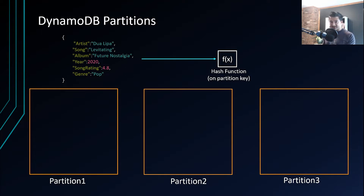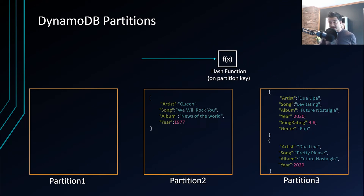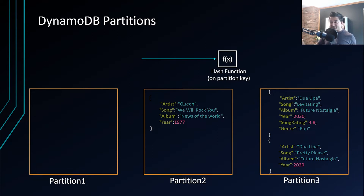When you insert an item, DynamoDB runs a hash function on the partition key — in this case the artist attribute — and based on the hash output determines which partition the item should go to. As you insert more data, different items go to different partitions. They are not stored in order because DynamoDB stores based on the hash function output, which is randomized — not the value of the attribute.